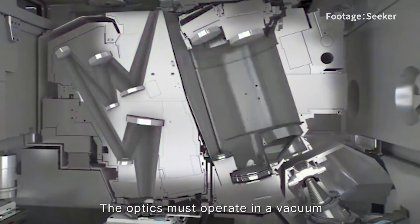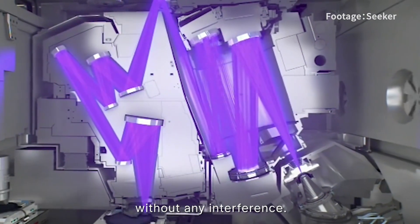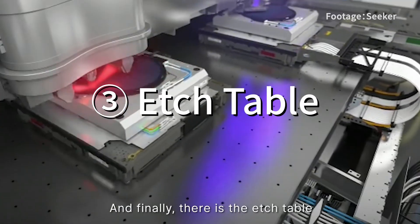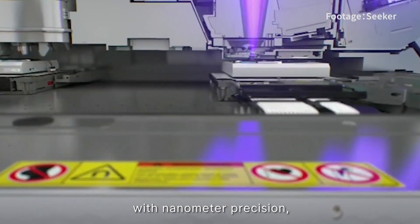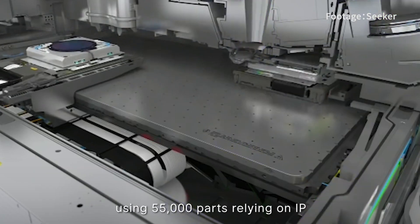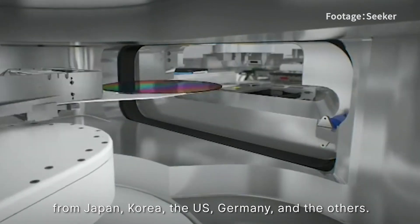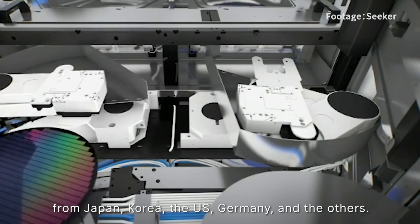The optics must operate in a vacuum without any interference. Finally, there is the etch table. This controls the etch patterns in the silicon with nanometer precision using 55,000 parts, relying on IPs from Japan, Korea, the US, Germany and others.